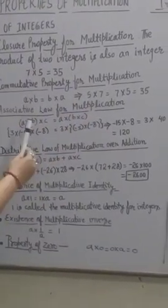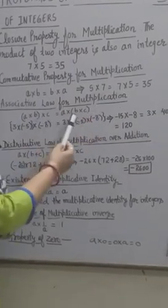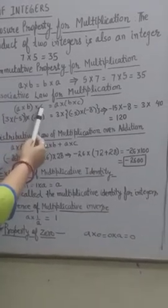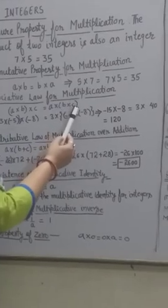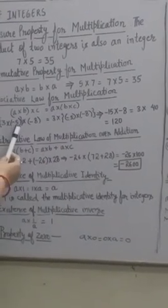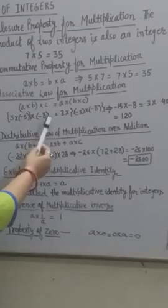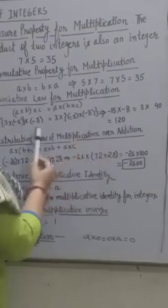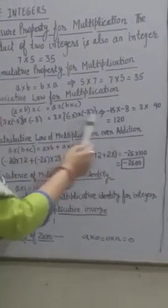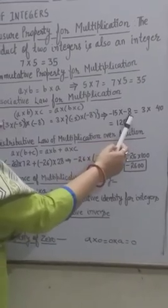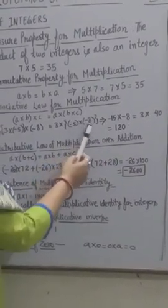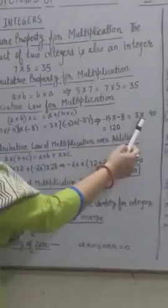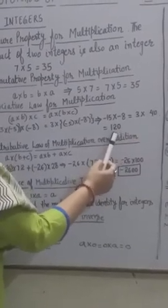The next property is the associative law for multiplication. If A, B, C are integers, then (A × B) × C = A × (B × C). For example: 3 × (−5) × (−8). In the first case, (3 × −5) = −15, then −15 × −8 = 120. In the second case, (−5 × −8) = 40, then 3 × 40 = 120. In both cases the answer is 120.